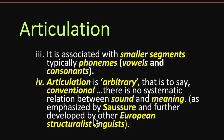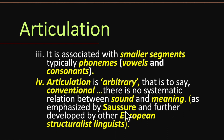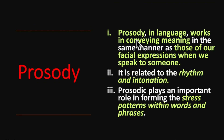The arbitrary nature of articulation was emphasized by Saussure and further developed by other European structuralist linguists. Articulation is conventional — it is about speech and sound, and there is no deep connection between sound and meaning. This was explained by Saussure in the field of linguistics and has further been promoted by European structuralist linguists.